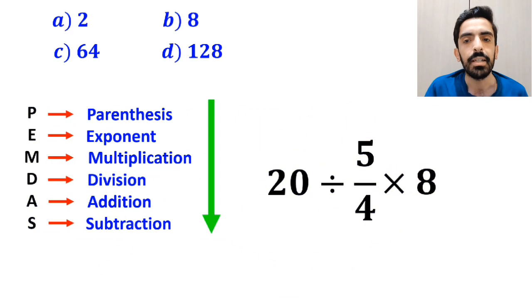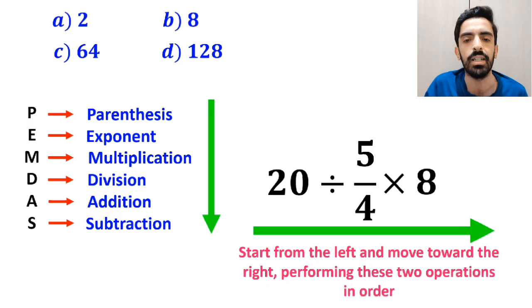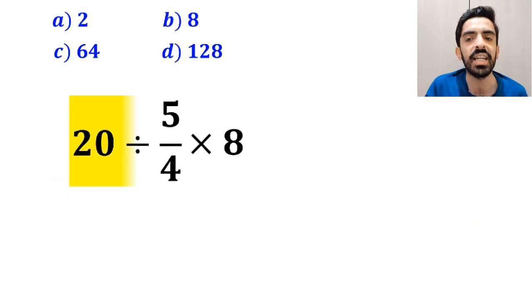In this situation, the best strategy is to start from the left and move toward the right, performing these two operations in order. So, we start with the expression 20 divided by 5 over 4.